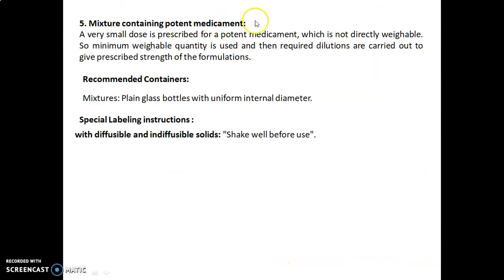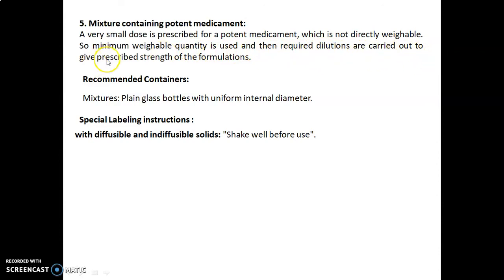The fifth type is mixtures containing potent medicament. A very small dose is prescribed for a potent medicament which is not directly weighable. So the minimum weighable quantity is used and then dilutions are carried out to give the prescribed strength of the formulation.